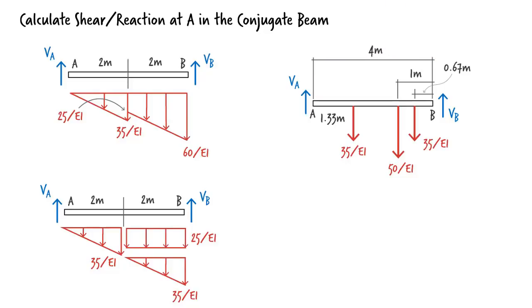So here is segment AB subjected to the concentrated loads. Now we are ready to write the equilibrium equations. Here, since we are interested in calculating VA only, we need just one equation. The sum of the moments about point B must be zero.